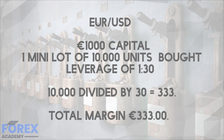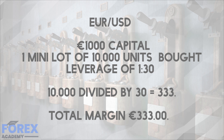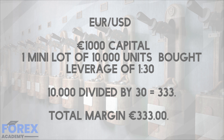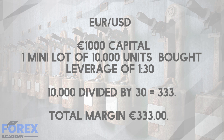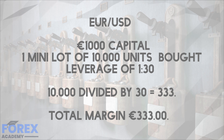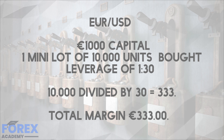Typically, a trader's platform will show a running profit and loss in the form of account balance and fluctuating equity. This will differ if trades are open: the margin being taken up by open positions, free or available margin, and margin level shown as a percentage. Leverage and margin requirements differ from one asset class to another, but consistency and careful risk management is essential while considering how to factor these into your trading.